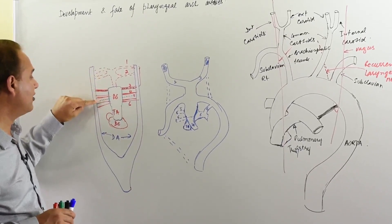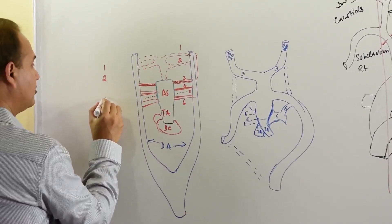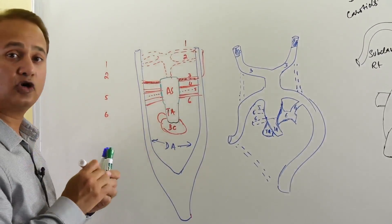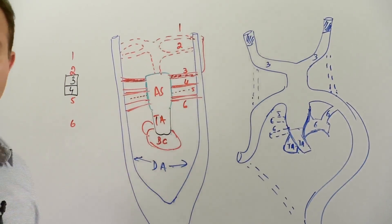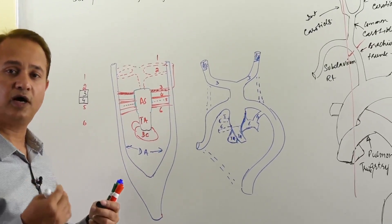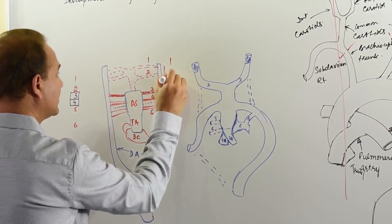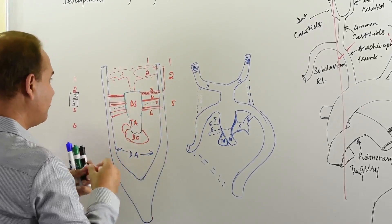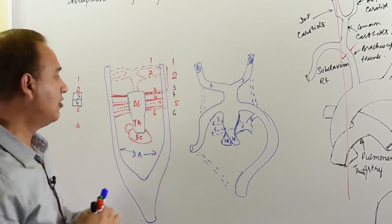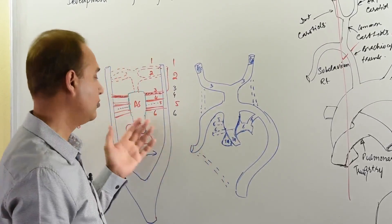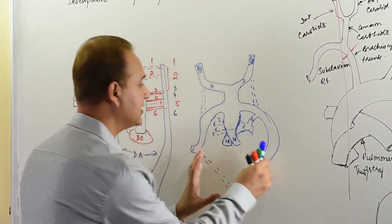On the right side: first, second, fifth, and sixth will regress. The third makes the common carotid and internal carotid; the fourth makes the proximal part of the subclavian. On the left side: first, second, and fifth regress; the third makes common and internal carotid; the fourth makes part of the arch of aorta; and the sixth becomes the ductus arteriosus.